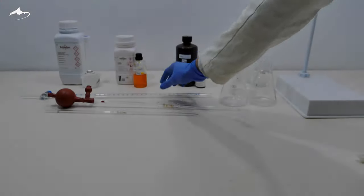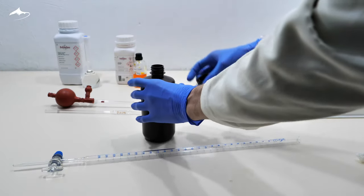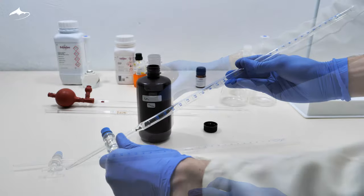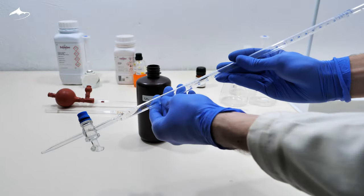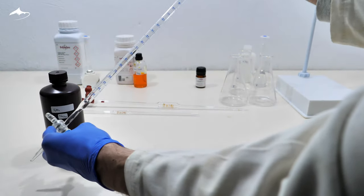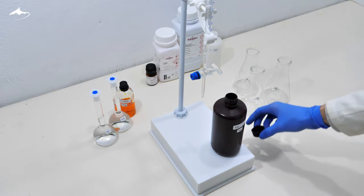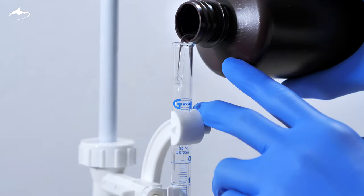First up, the standardization of the silver nitrate solution against sodium chloride solution. For that, a small volume of titrant solution is used to wash the burette. Once done, the setup is arranged and the burette is filled and primed with titrant solution.